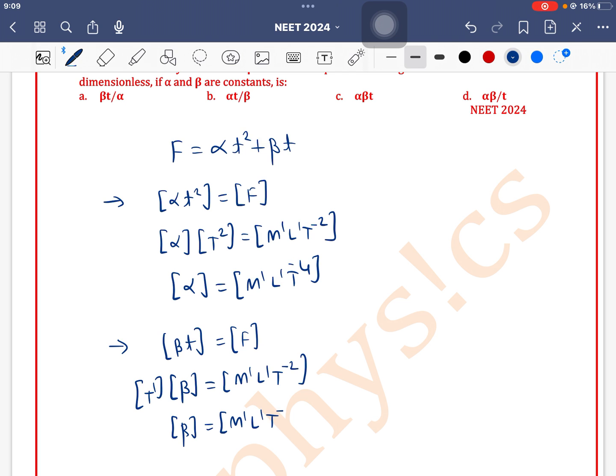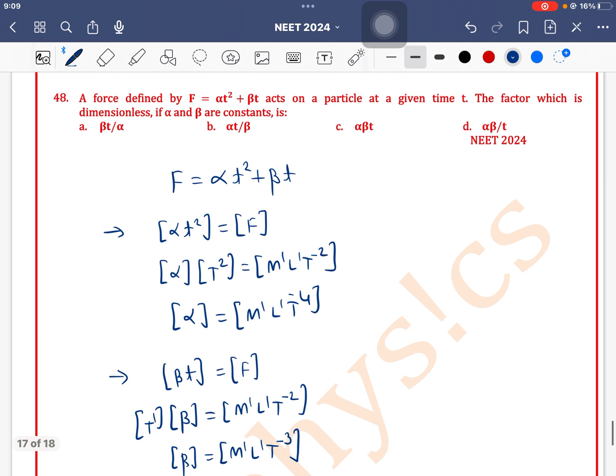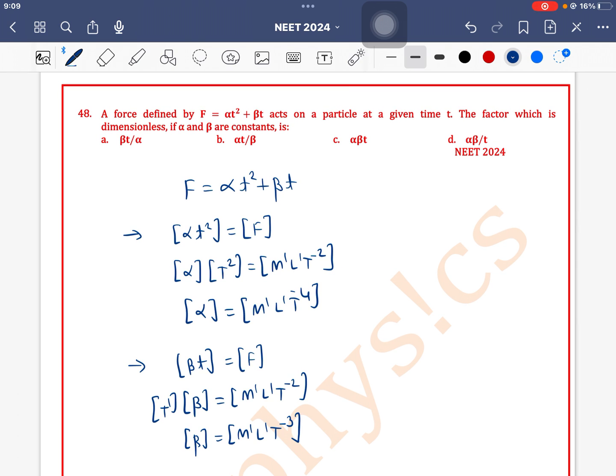Now we can check each option. If we check here, what is common in both alpha and beta? m¹l¹ is common, right? So that will cancel out. I need a dimensionless quantity, so both m¹l¹ will cancel.